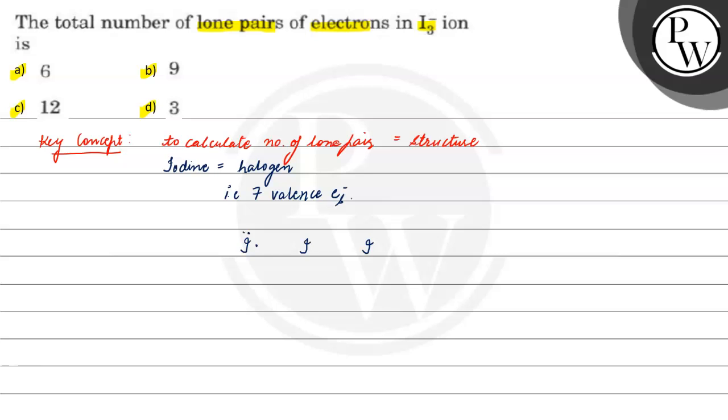Drawing seven electrons for each of the three iodine atoms. There is a negative charge, which means we should add one more electron to complete it.